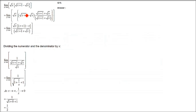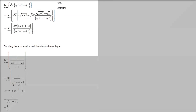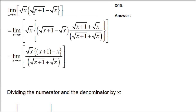This is question number 18. Here we have limit x tends to infinity. Under root x outside, and inside this we have under root x plus 1 minus under root x. So if we replace x by infinity, it will be infinity into infinity minus infinity, so we are going to get infinity.